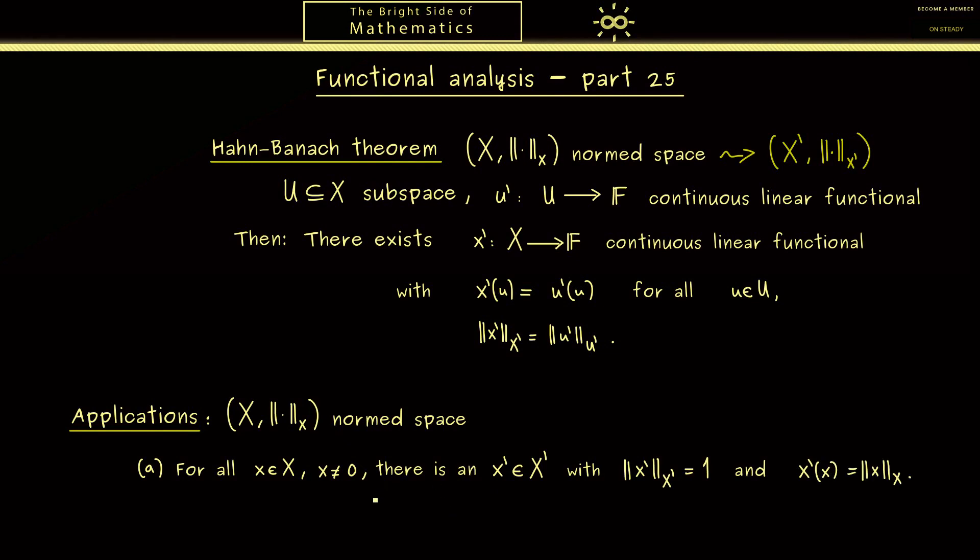This now already tells us that if we have a lot of points x in X then we find a lot of continuous linear functionals. So let's write down a proof where we apply the Hahn-Banach theorem from above.